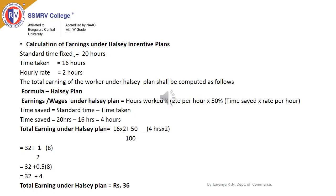We will understand the computation of earnings under the Halsey Plan. From the given information, you are required to calculate earnings. The standard time allowed is 20 hours, time taken by the worker to complete the job is 16 hours, and the rate per hour is ₹2. Earnings under Halsey Plan equals hours worked into rate per hour, plus 50% of bonus into time saved into rate per hour.